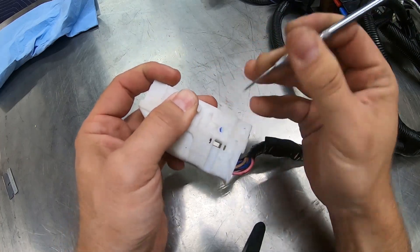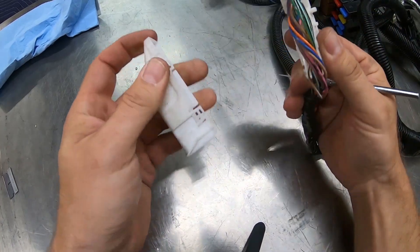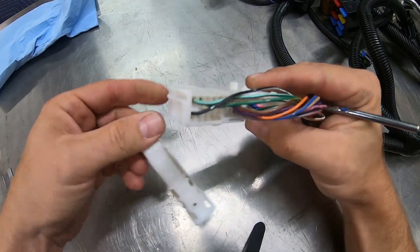There are four tabs, two on each side, that hold this backing cover onto the harness connector itself.